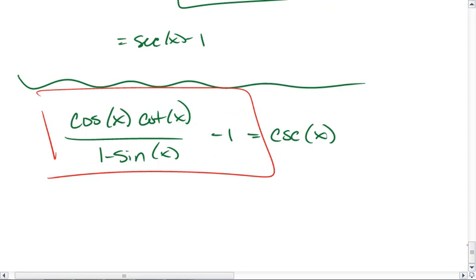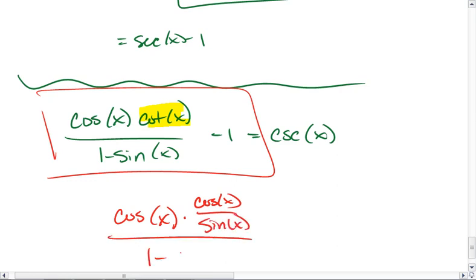First things first, I'm going to rewrite cotangent in terms of sine and cosine. I get cosine x times cosine x over sine x, all over 1 minus sine of x minus 1 equals cosecant x.